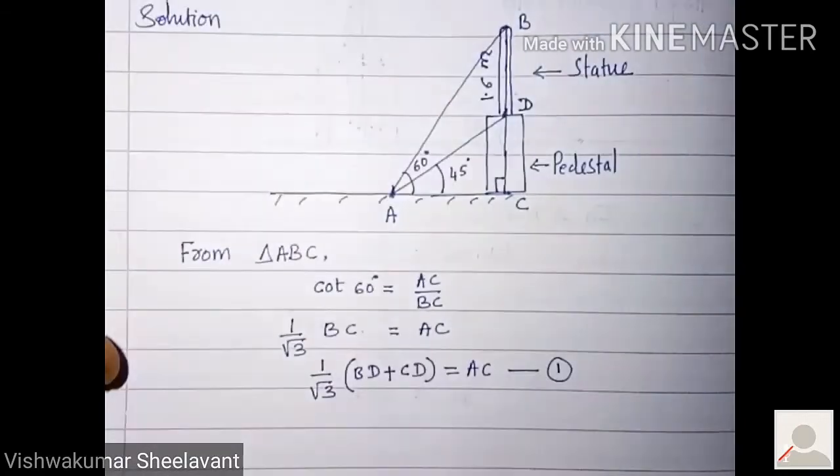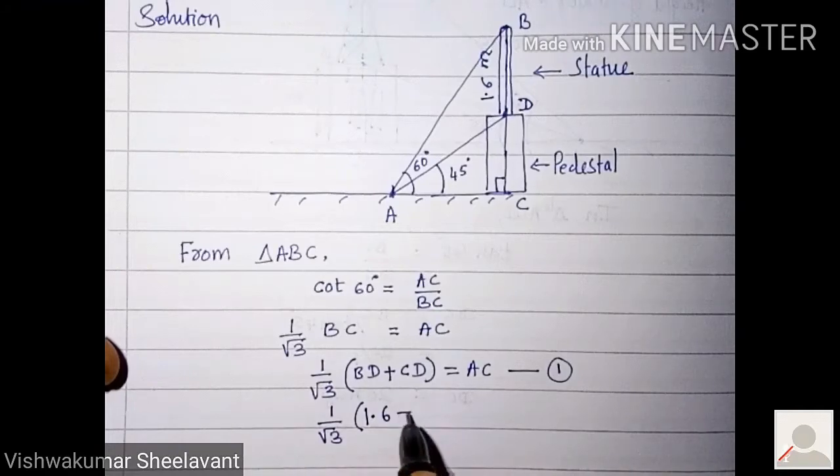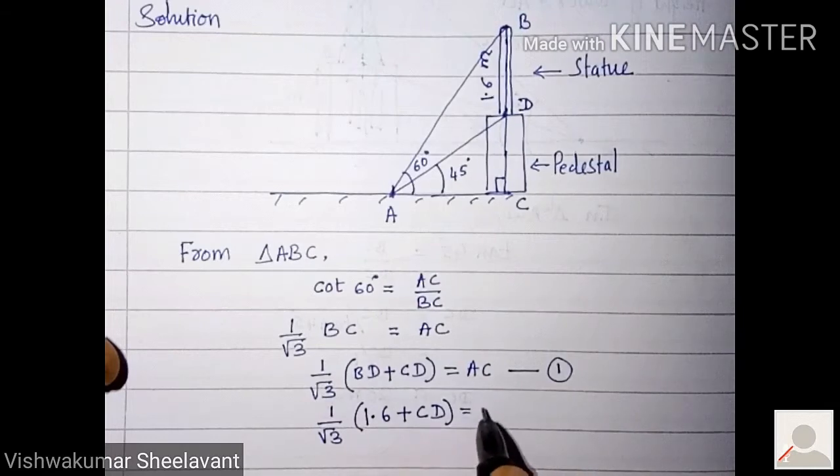What is BD here? BD is 1.6, very good. So 1 by root 3 into 1.6 plus CD equals AC. Call it as equation 2 after substitution.